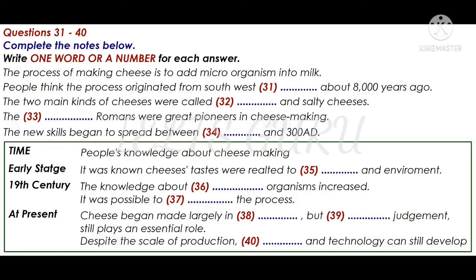Nowadays, cheese is made on a large scale in factories, although the small producer working from his dairy farm continued to exist and still exists today. Cheesemaking moved very much into the world of technology and industrial processes, although, because the aim is still to produce something that people like to eat, there's still an important role for human judgment. People still go round tasting the young cheese at different stages to see how it's getting on, and may add a bit of this or that to improve the final taste. Whatever the scale of production, there is still room for the development of art alongside the technology.